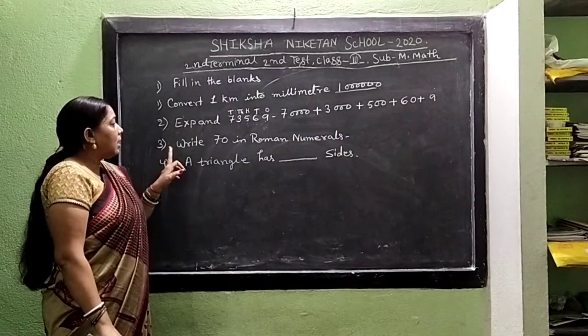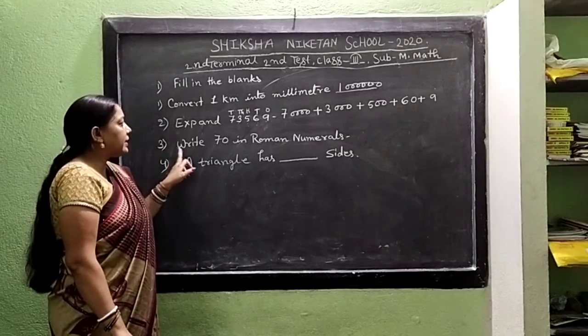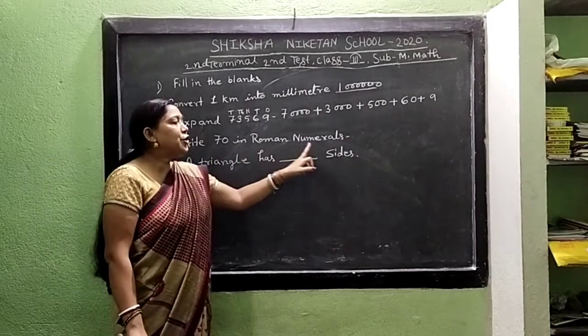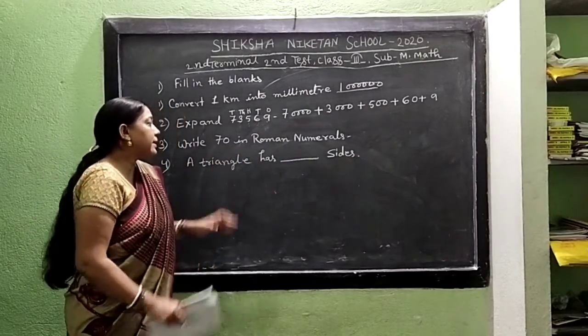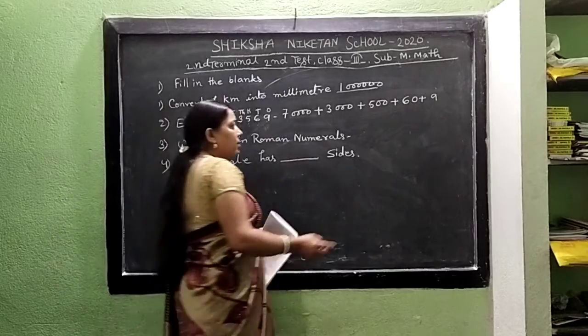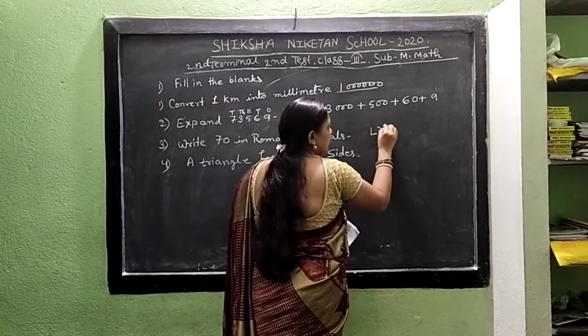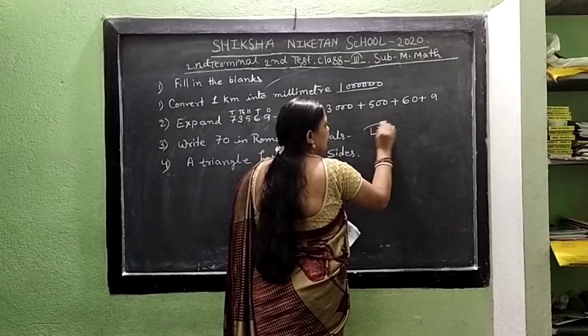Matter number 3. Write 70 in Roman numerals. 70 in Roman numerals is LXX.